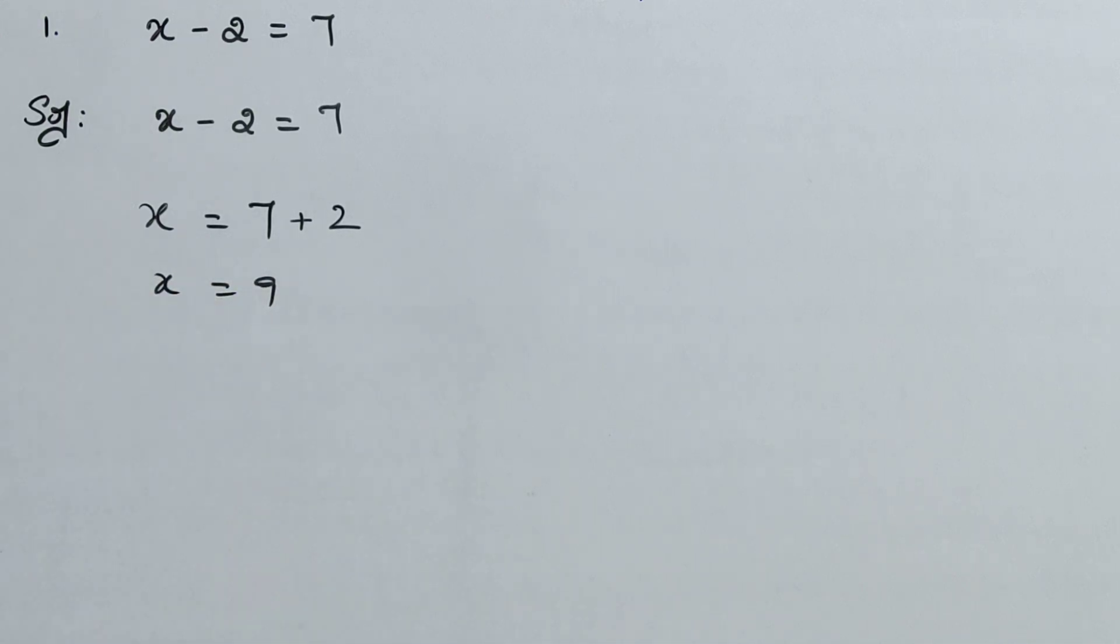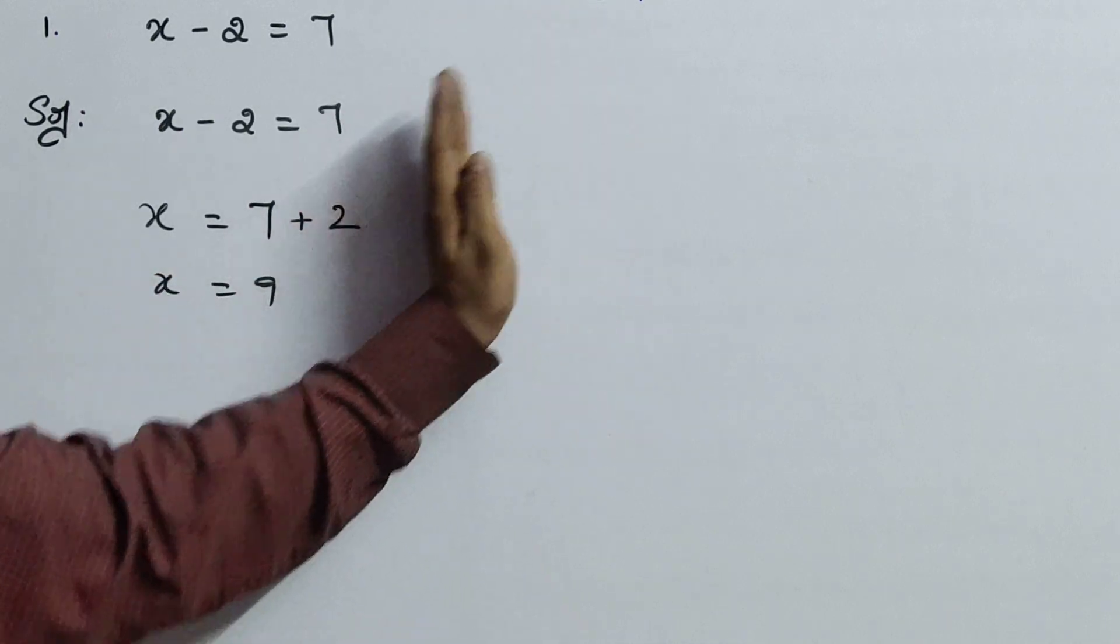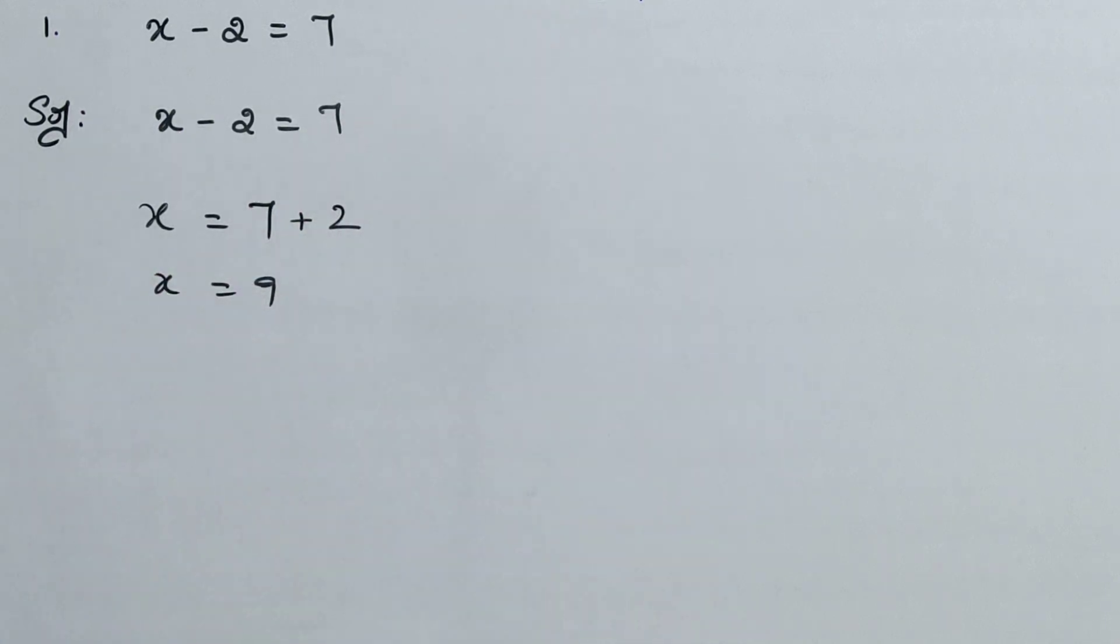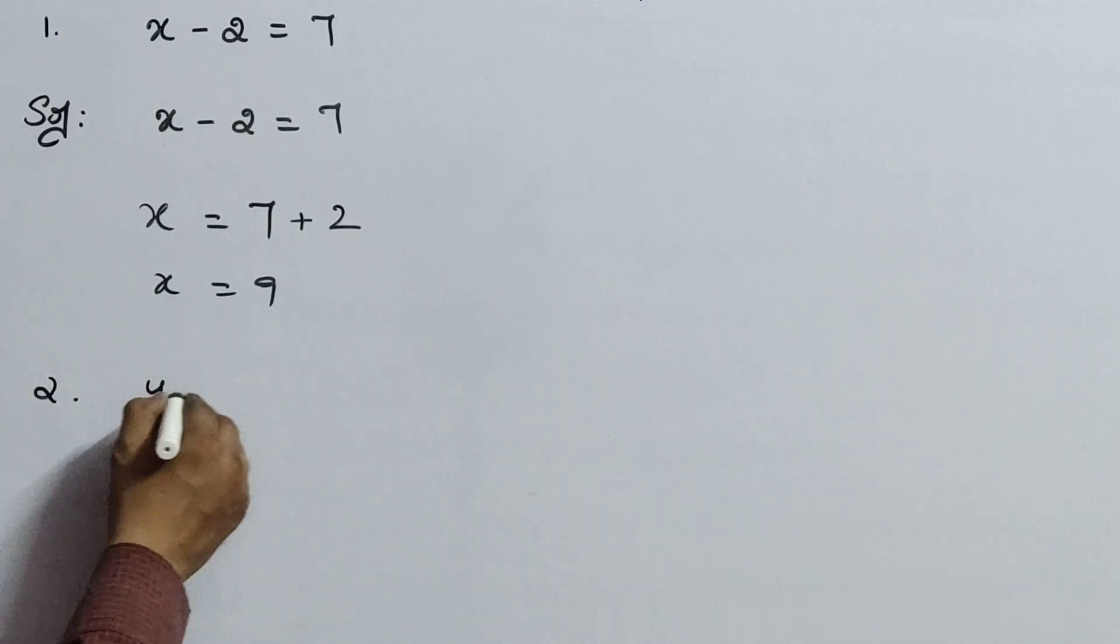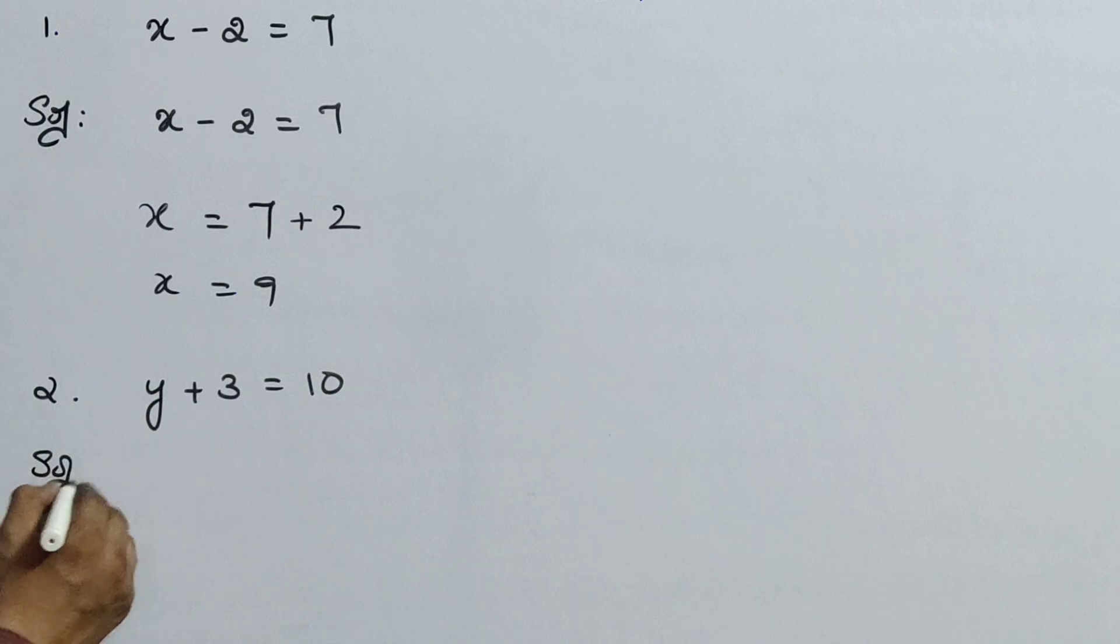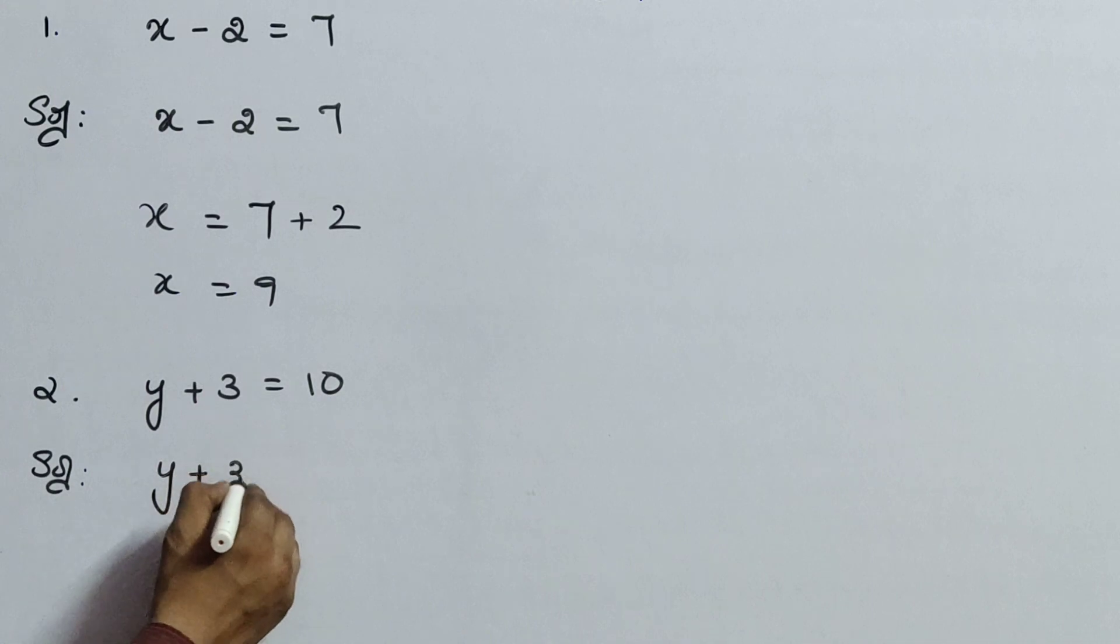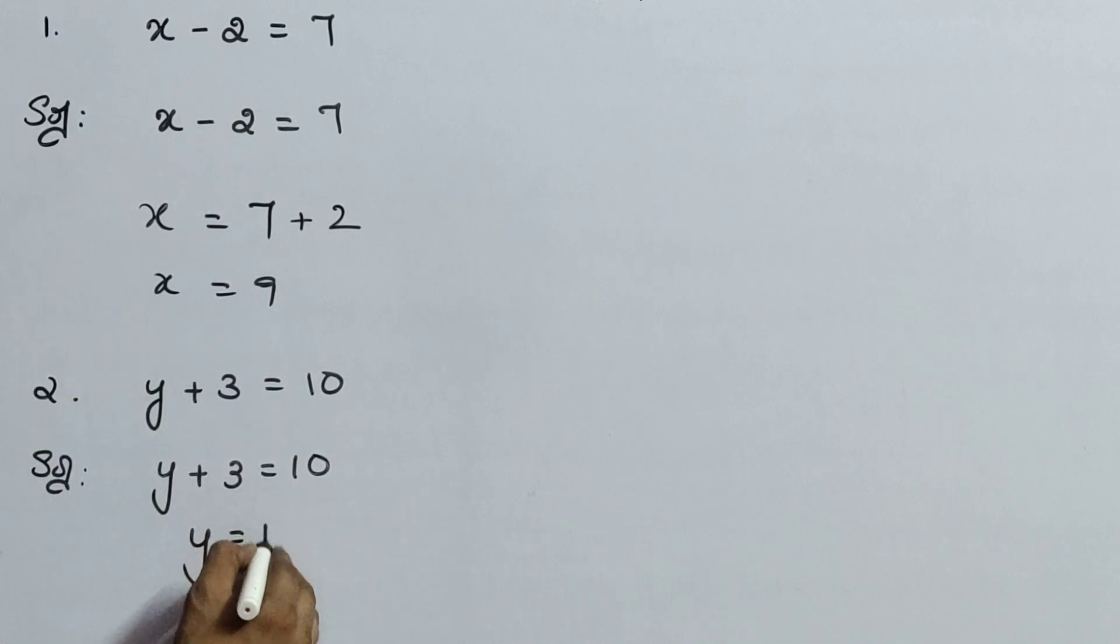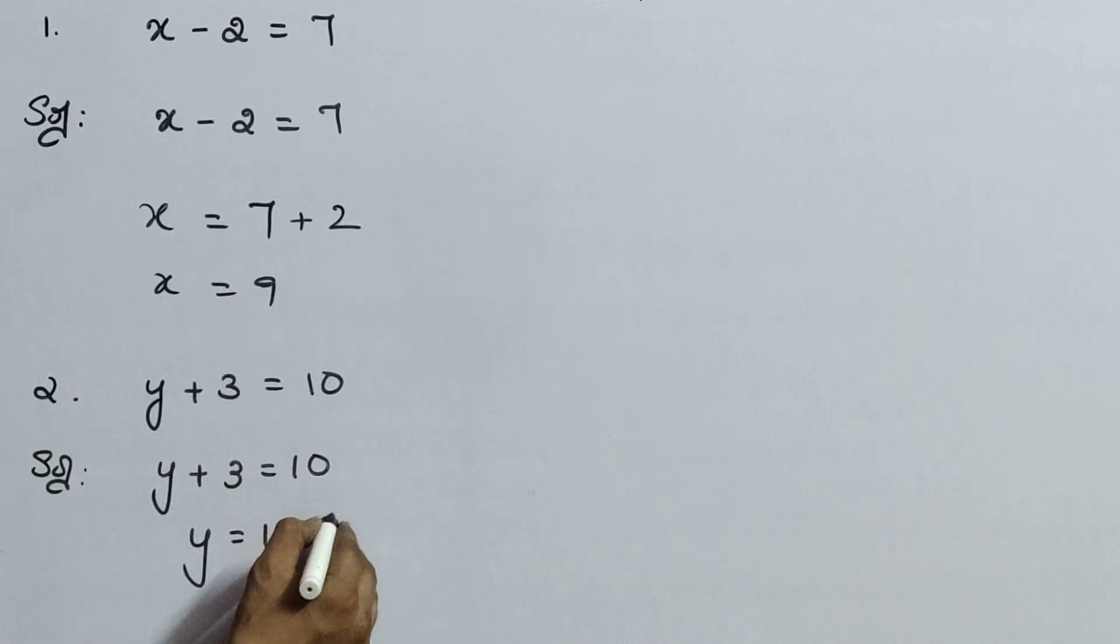Next. Write neatly children and if possible write per one page, sums side by side. The second question is y plus 3 equals to 10. Now y plus 3 equals to 10 means here what happened? The variable has changed. Now it became y. So y plus 3 equals to 10. Now y equals to 10. This plus 3 will transpose means minus. So y equals to 10 minus 3 is 7.